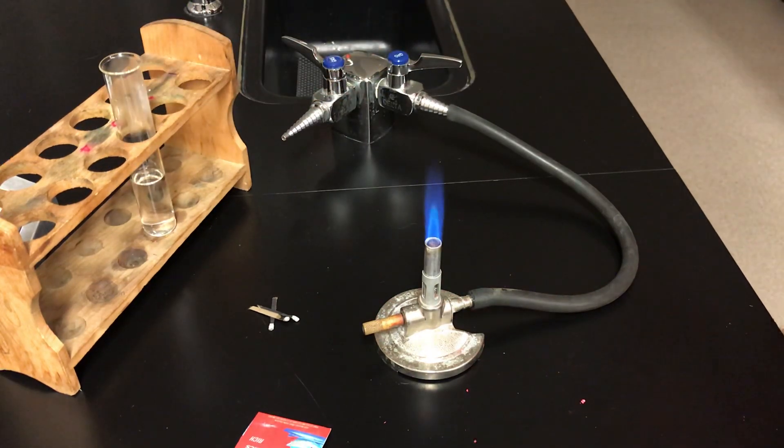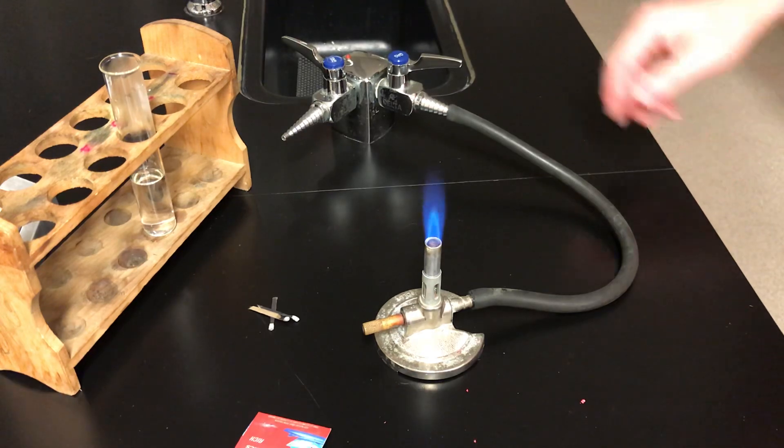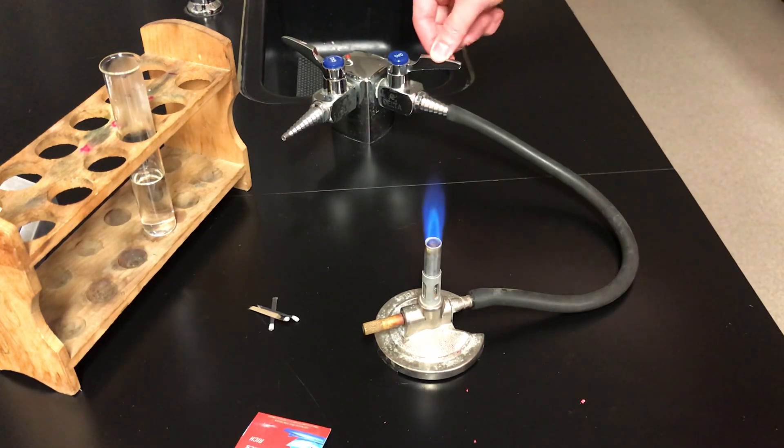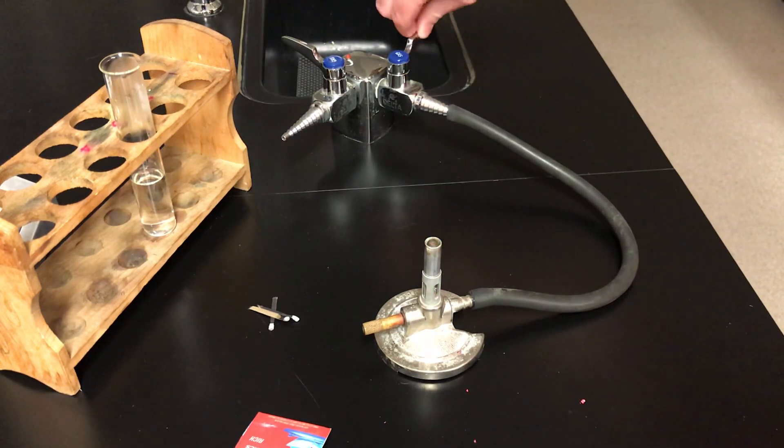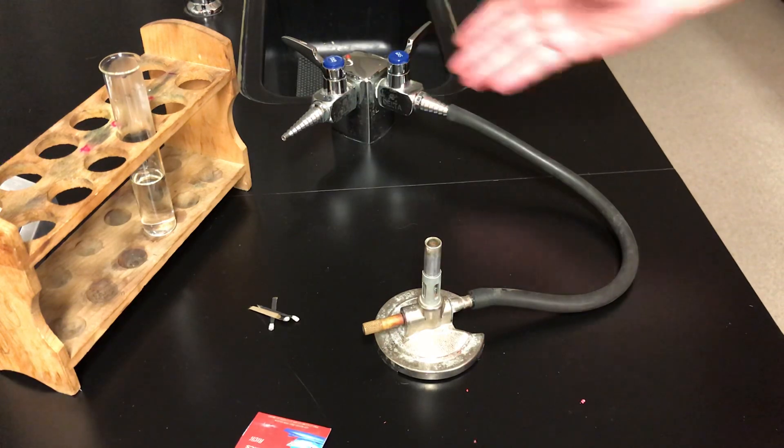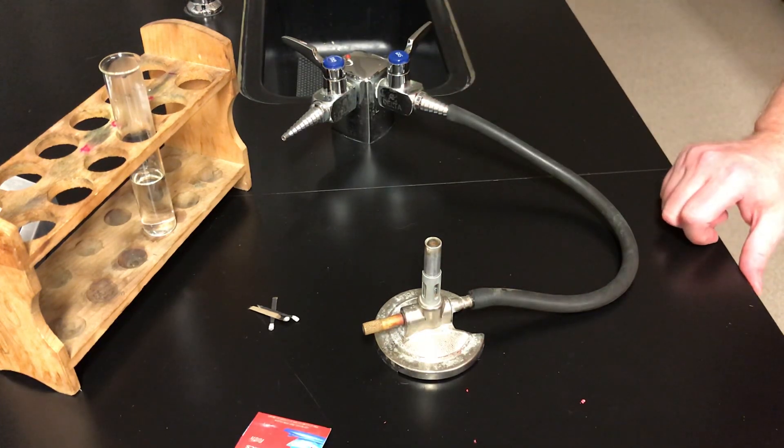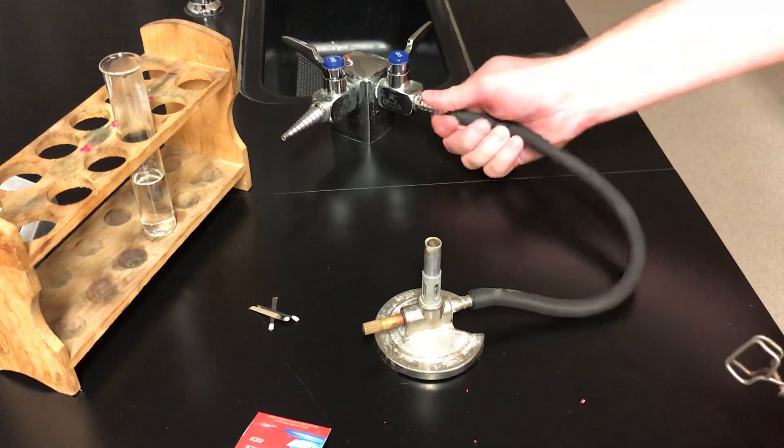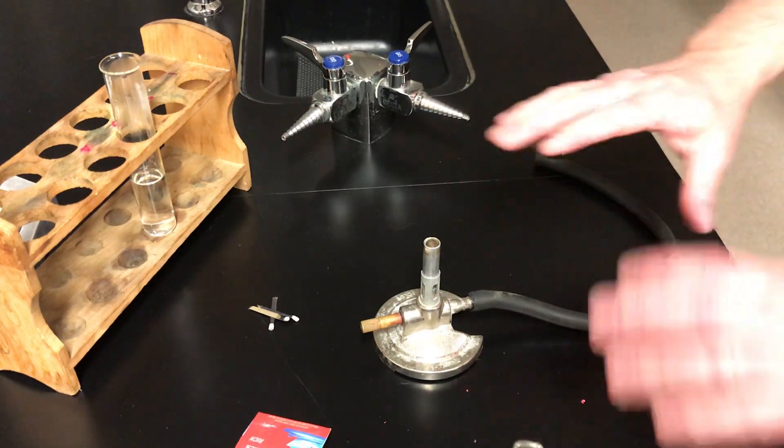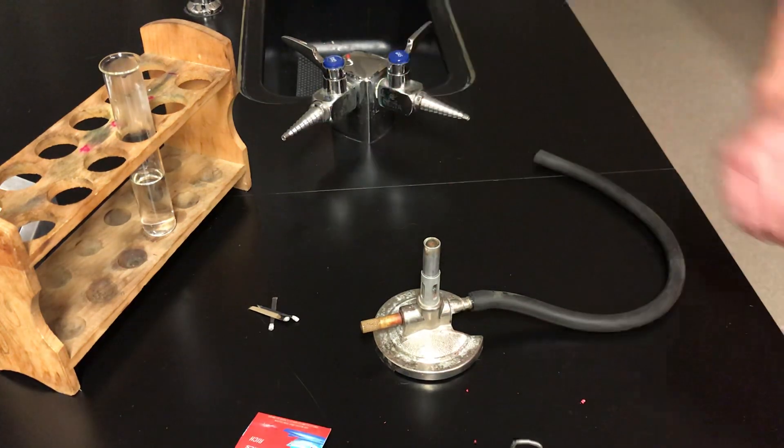Now when you're finished with the burner, don't just blow it out. When you're finished with the burner, use the nozzle like this. Turn the handle until it's perpendicular with the nozzle and the gas goes off. So there you have it. Lighting a burner, the parts of a burner, and using it to heat a test tube.